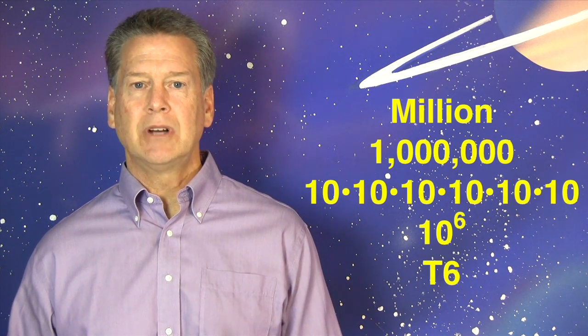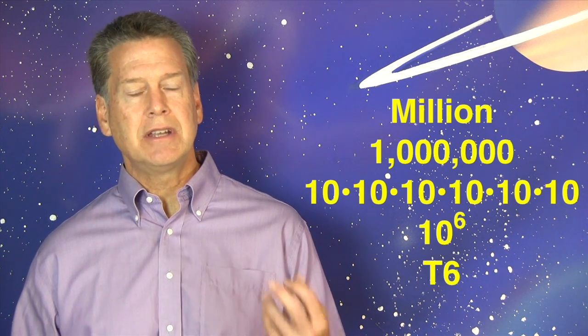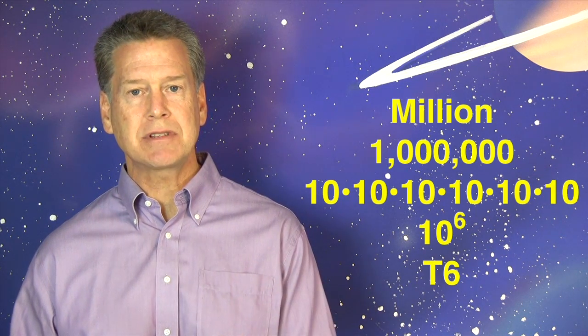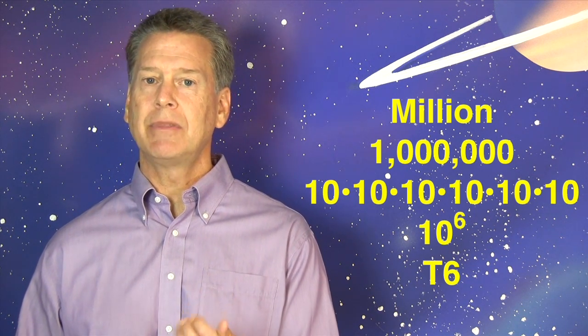1,000,000, a 1 followed by 6 zeros, 10 times itself 6 times, 10 to the 6th power, or T6.